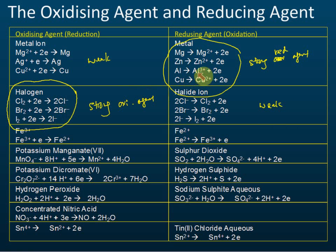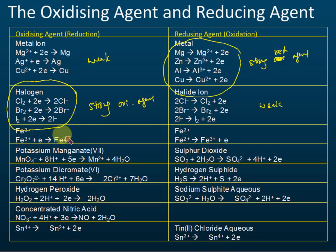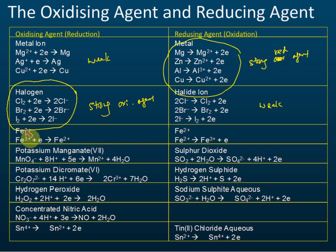The next thing you need to know is iron 3 and iron 2. Iron 3 can be reduced to iron 2, so it is an oxidizing agent — it undergoes reduction. Iron 2 can be oxidized to become iron 3, so it is a reducing agent.